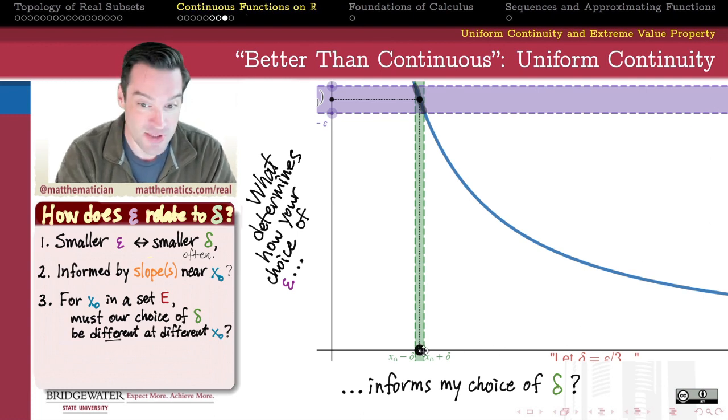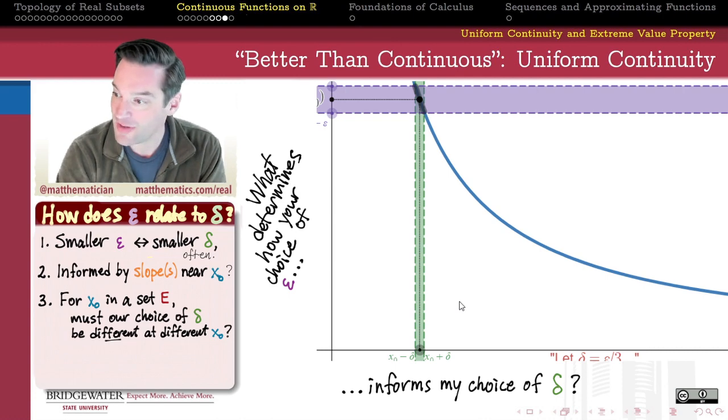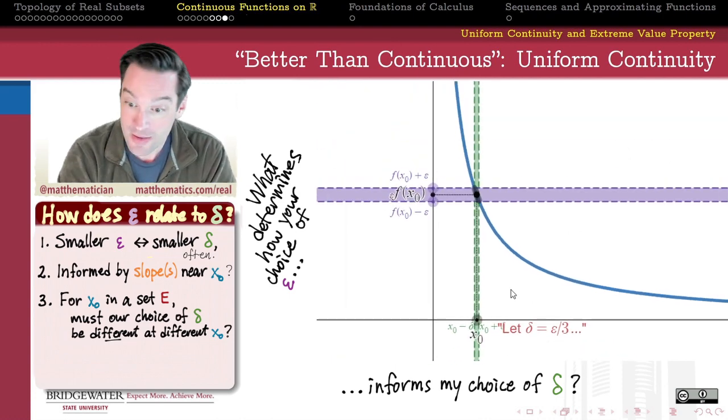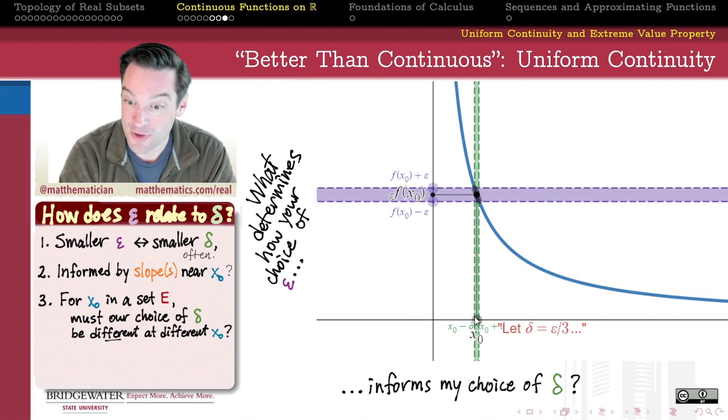And so there are some functions where, in principle, the choice that we have for delta is going to necessarily be different from one point to the next point in my domain that I'm assessing. And so those functions, even though they are continuous, they're kind of continuous in, I don't know, a not nice way.